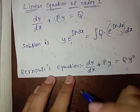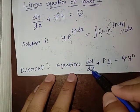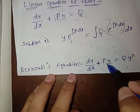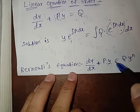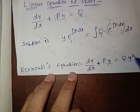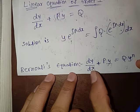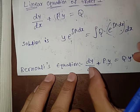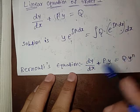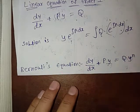Now, what is Bernoulli's equation? It is dy/dx + py = q·y^n. If an equation has this form, we call it a Bernoulli's equation.